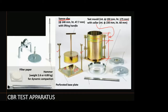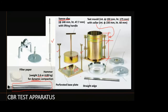The apparatus also includes a hammer — either 2.6 kg or 4.89 kg — used for dynamic compaction. The weights are similar to those used in standard or modified Proctor tests. A straight edge is used for scraping and leveling excess soil after compaction.